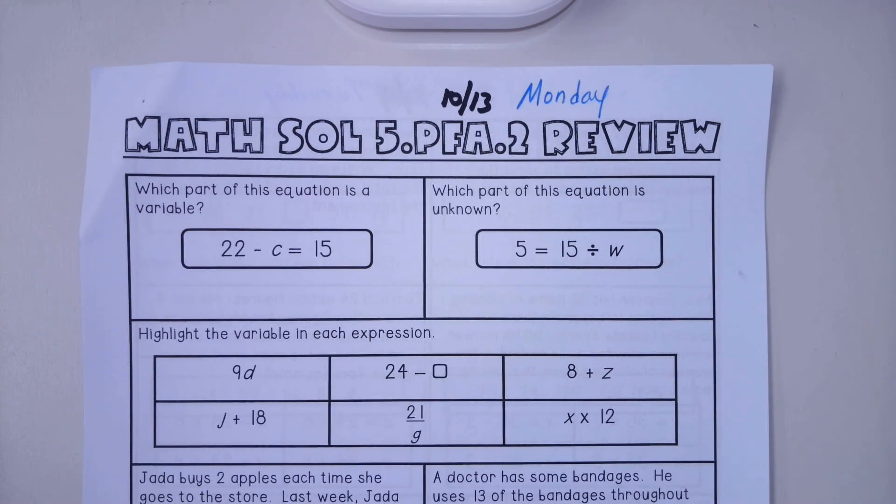Good afternoon. This is the homework for Monday, October 13th. Let's start at the beginning. We are continuing to work on variables, unknowns in an expression or equation.